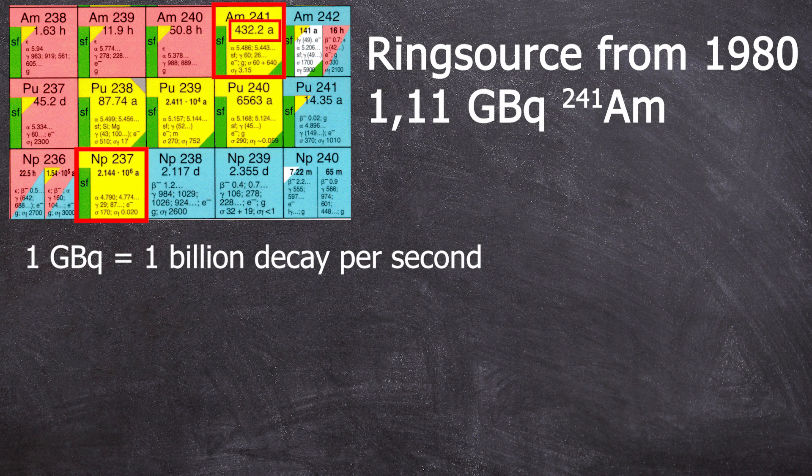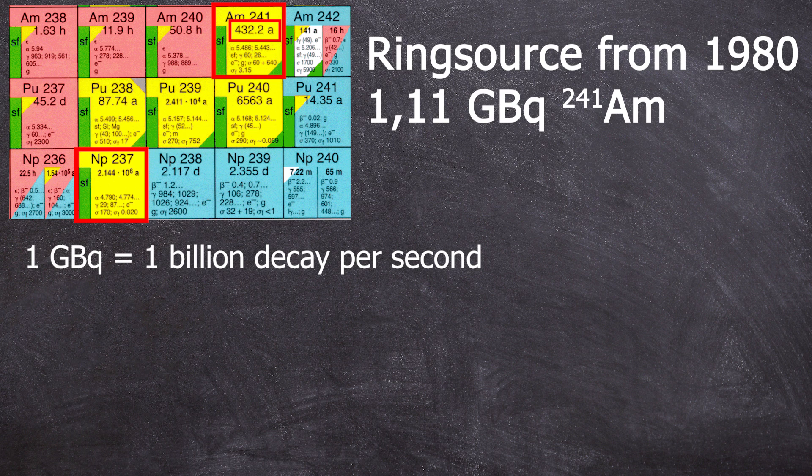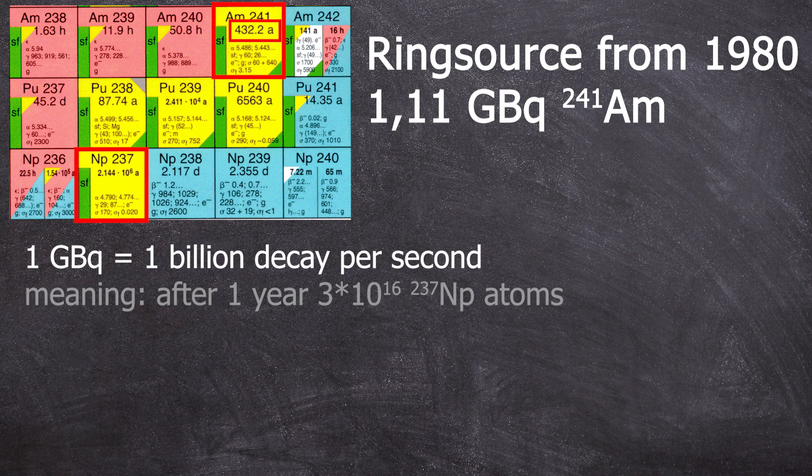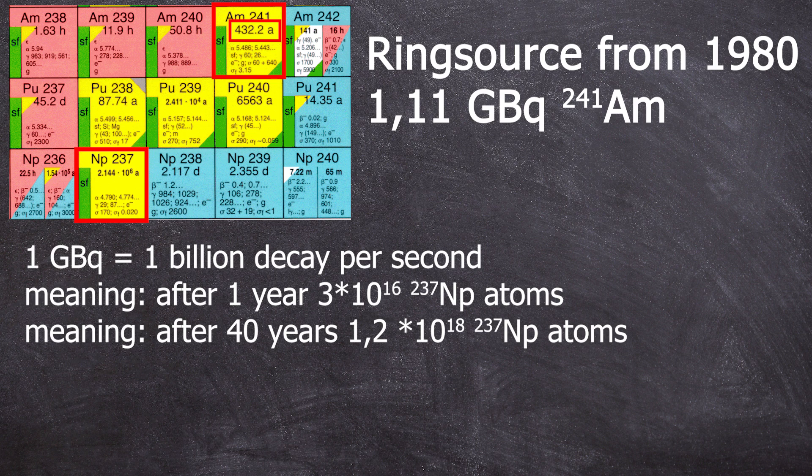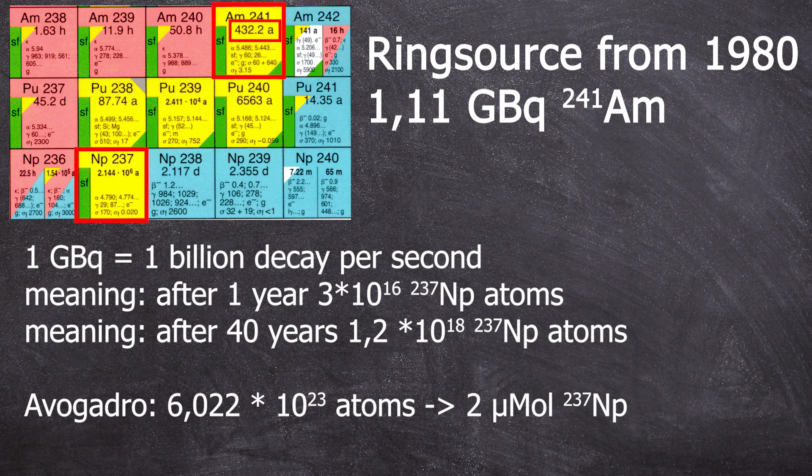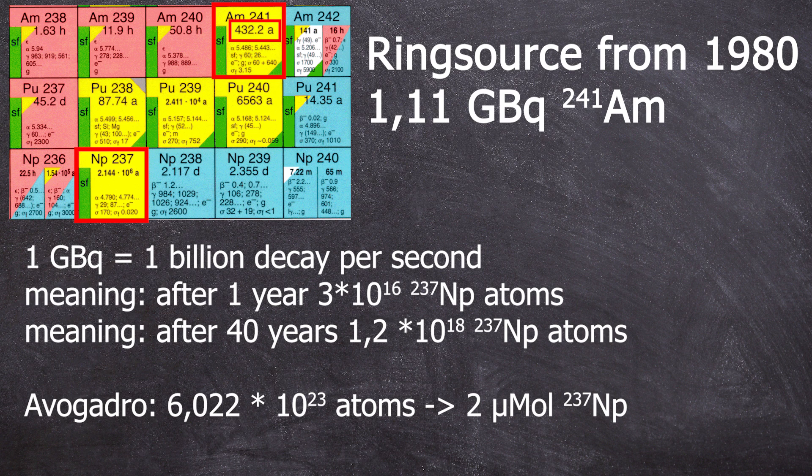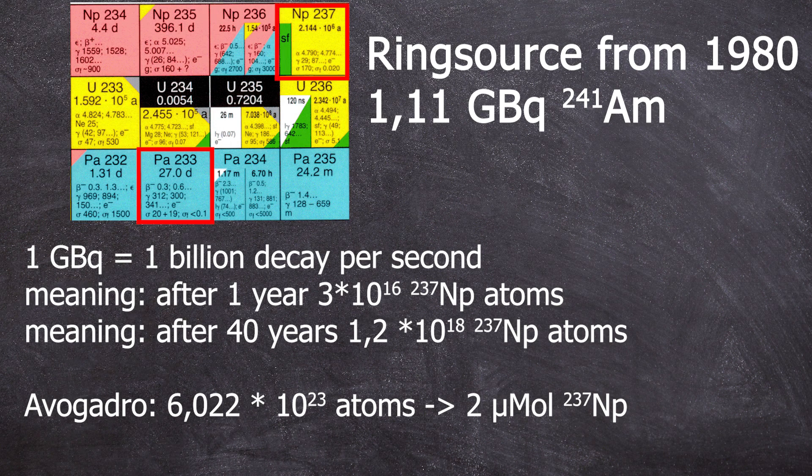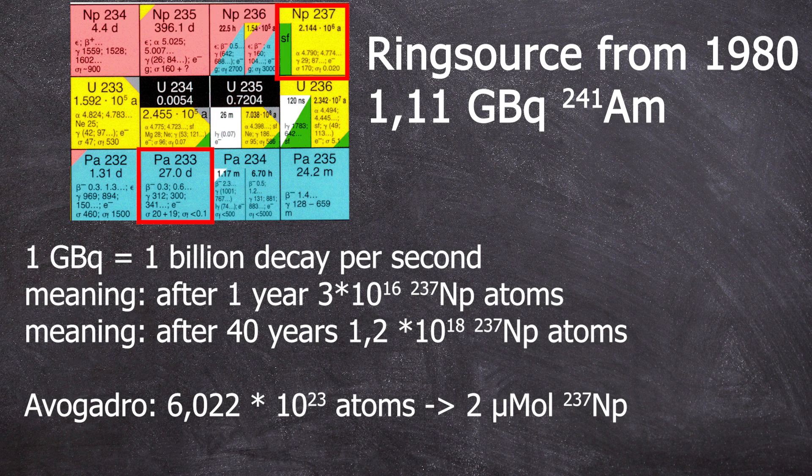This sample is from 1980, which means roughly estimated 1 GBq is 1 billion decays per second. So 1 billion neptunium-237 atoms per second. So after one year, we have already 3 x 10 to the power of 16 neptunium atoms. And after 40 years, accordingly, 1.2 x 10 to the power of 18 atoms. Avogadro's constant is 6.22 x 10 to the power of 23. So that's about 2 micromoles of neptunium.